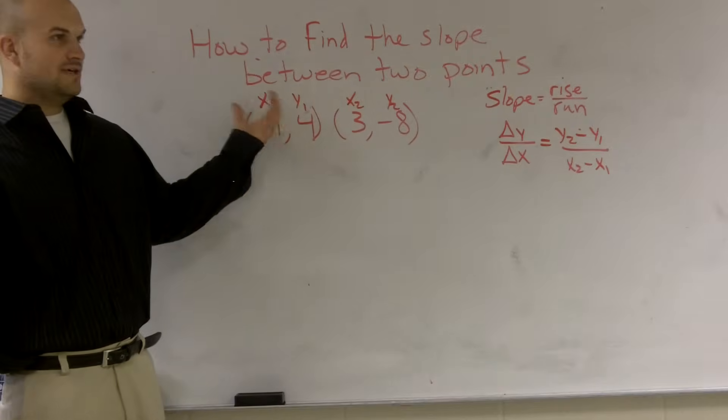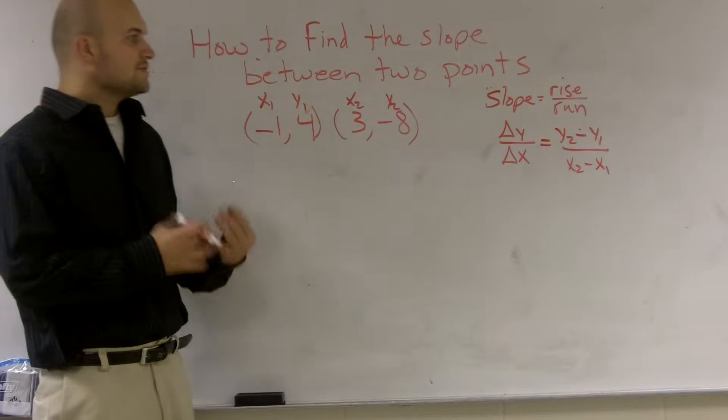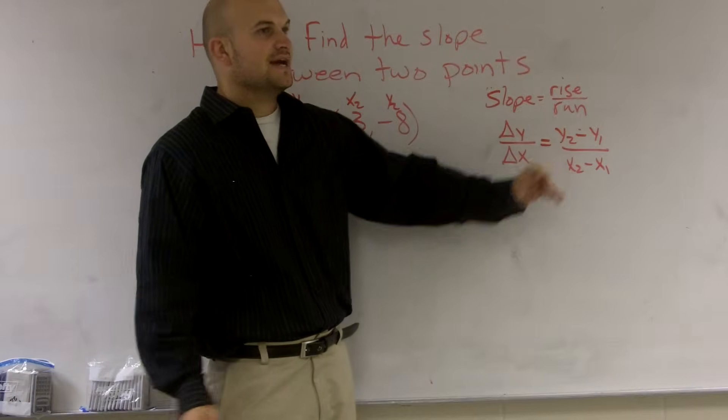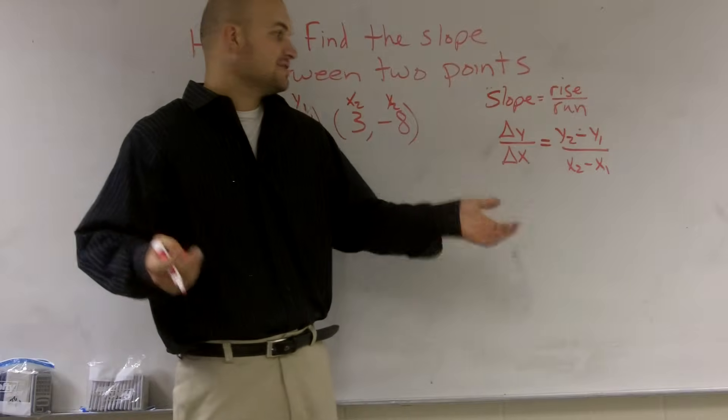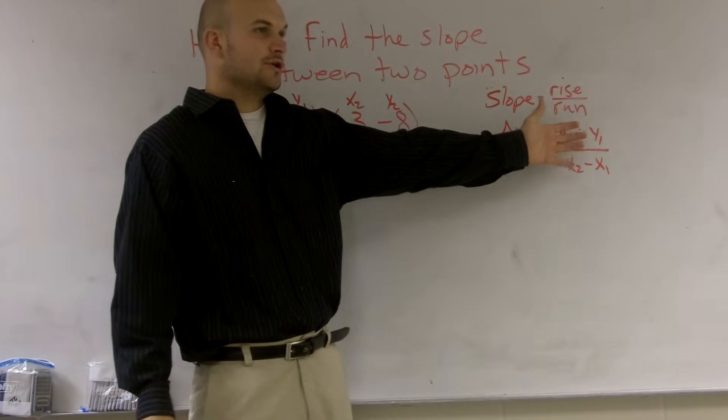However, you can't both label these x, y, so we use subscripts to differentiate between the two points. Alright? So now if I know that my slope is the change in y over the change in x, all I'm going to do now is just like we learned before. Now we're just going to evaluate and plug in our values into our equation for slope.